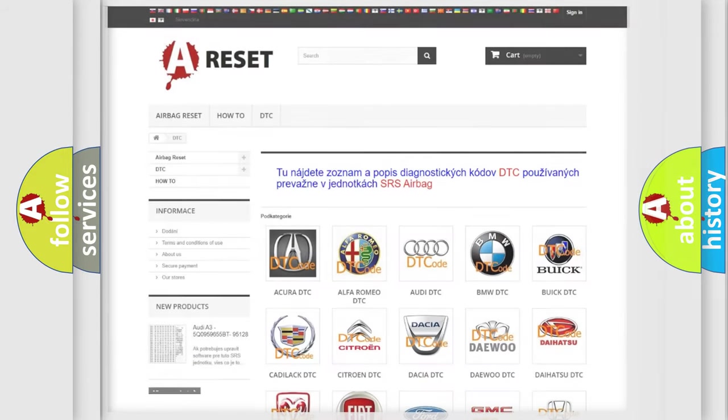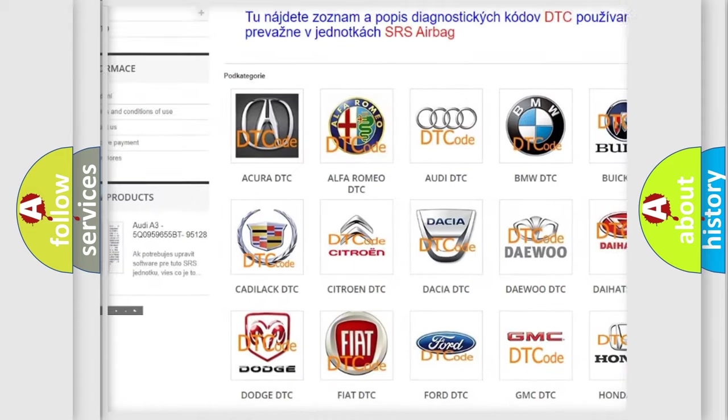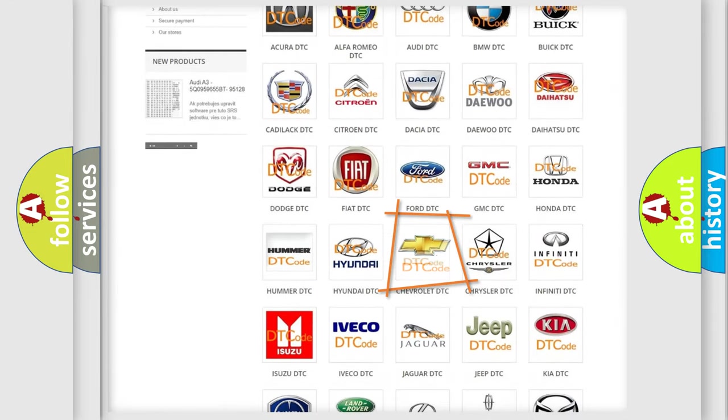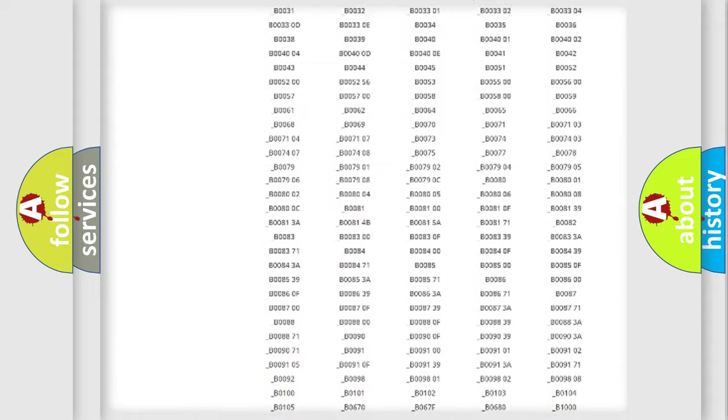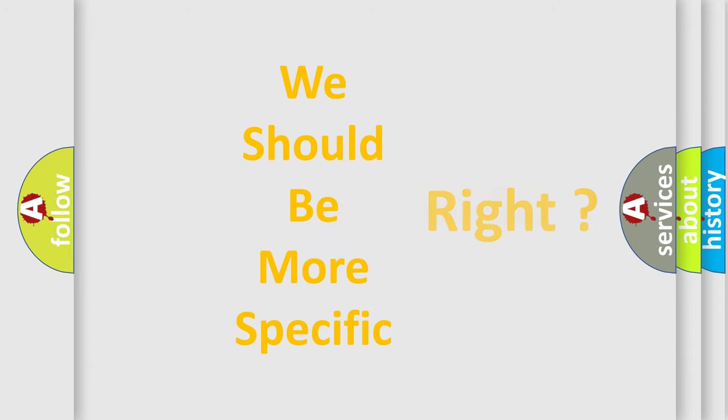Our website airbagreset.sk produces useful videos for you. You do not have to go through the OBD2 protocol anymore to know how to troubleshoot any car breakdown. You will find all the diagnostic codes that can be diagnosed in Chevrolet vehicles, and many other useful things. The following demonstration will help you look into the world of software for car control units.